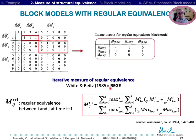The measure was also developed for regular equivalence. It is this measure that was used in the example we saw in the first part of this course on world city networks.